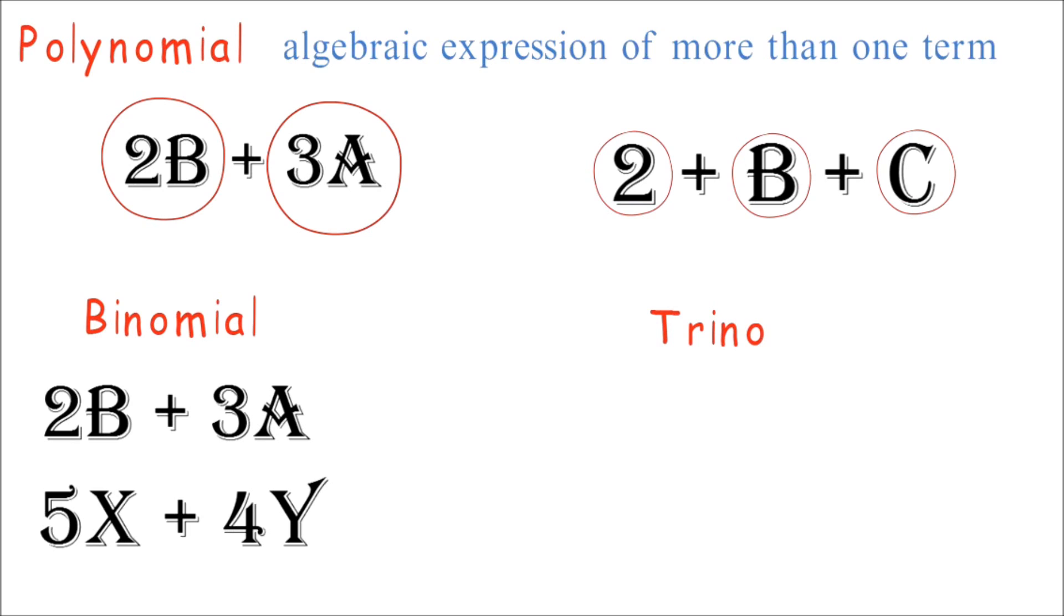Finally, let's look at trinomials. A polynomial of three terms is a trinomial. Example, 2b plus 6a minus 3a. Here, we have three terms and therefore it is a trinomial.